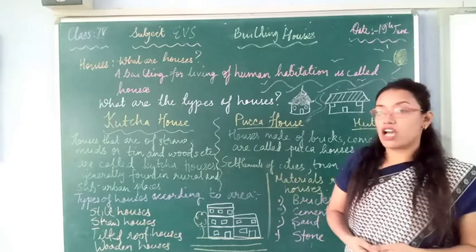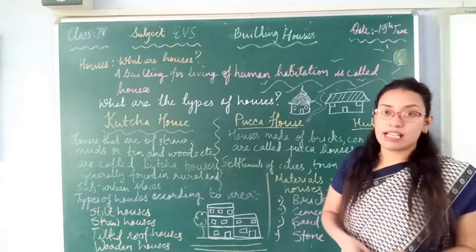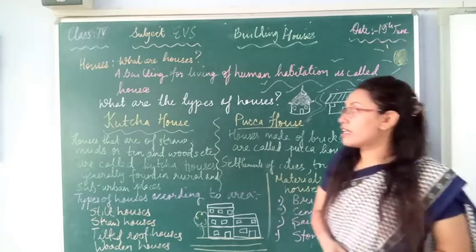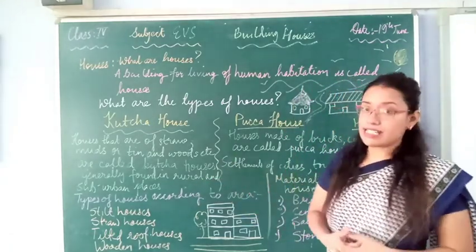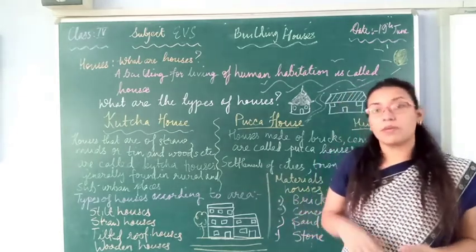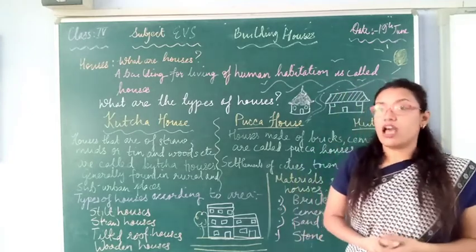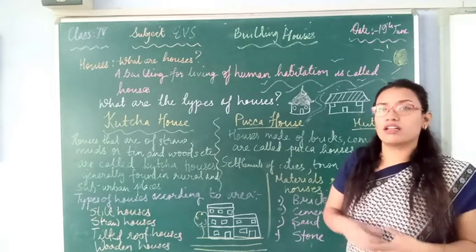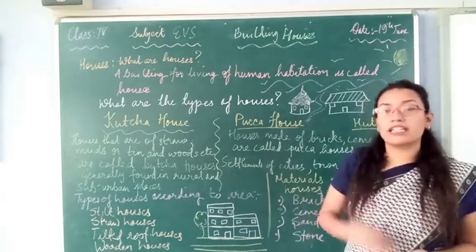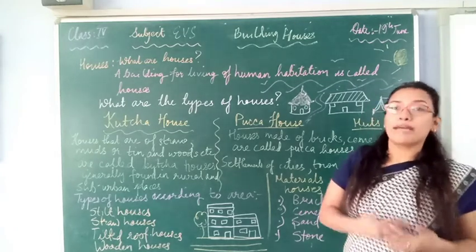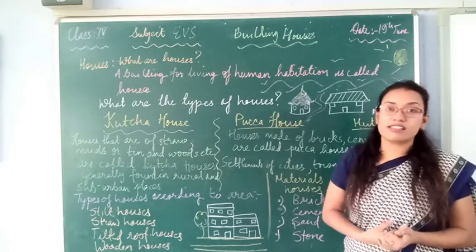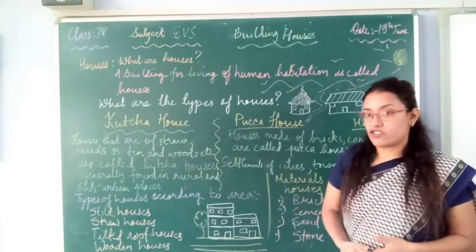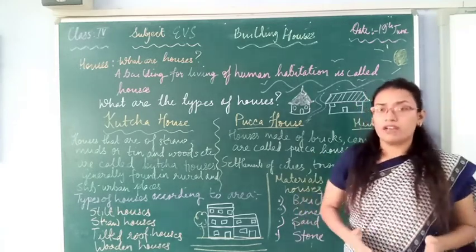One advantage of a kachha house is that it is very easy for people to make. It is accessible to almost all different sections of society, irrespective of their financial situation. These kinds of houses are found in suburban places, towns, and villages. They are small, scattered, not permanent, temporary, and destructible. In hazardous disasters like floods and landslides, these kinds of houses are easily destructible, and people face a lot of difficulty.